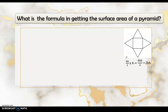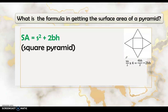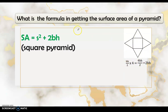Therefore, the formula for the surface area of a square pyramid is: SA = s² + 2bh, where s² is the area of the square base and 2bh represents the combined area of the four triangular faces (derived by multiplying one triangle's area by 4 and simplifying).